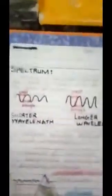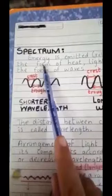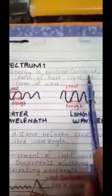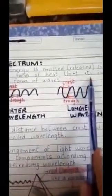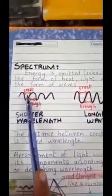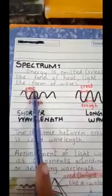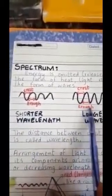Spectrum. Now, what is spectrum? We know that energy is emitted or released in the form of heat, light, etc., in the form of waves. You can see these waves. Now, this is crest as you can see over here and this is trough. This part is crest and this is a trough.